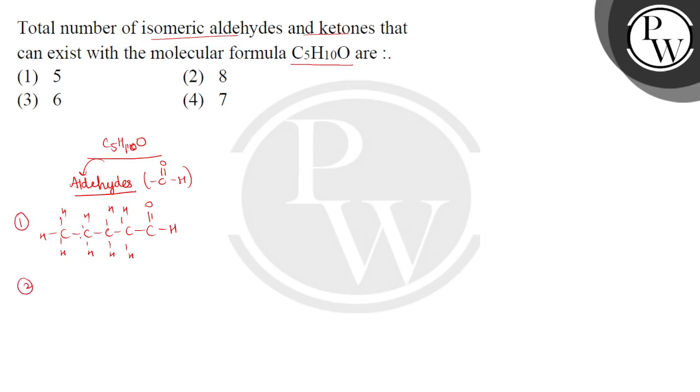The next possibility is a branched structure. Suppose we have 4 carbons in a chain with the aldehyde group, and one carbon branch attached. In this type, one end has the aldehyde group. This gives us a second aldehyde structure.